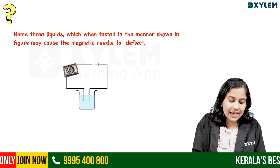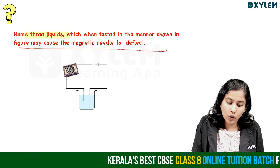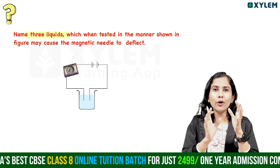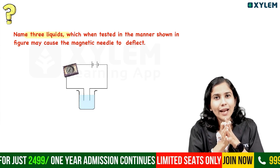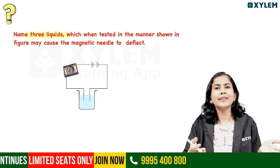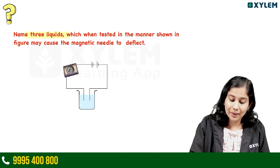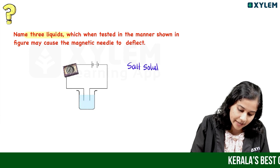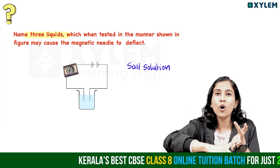Name three liquids which, when tested in the manner shown in the figure, may cause the magnetic needle to deflect. When we use the testers and the magnetic needle shows deflection, we call it a conducting solution. So we need to name three such solutions. We can learn the answers. Acid, base, and salt solutions are conducting solutions.